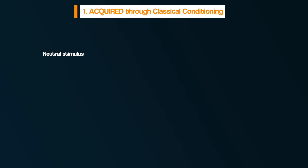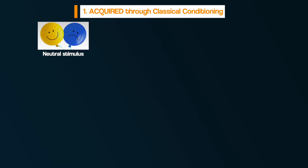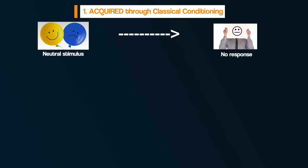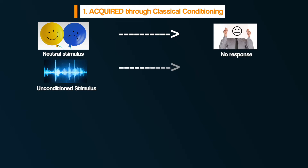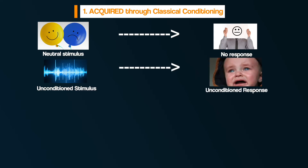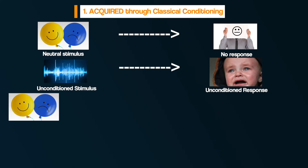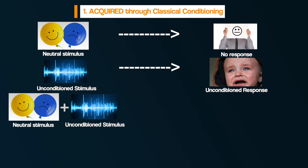Let's imagine someone has a phobia of balloons. The behaviourist explanation states that there is a neutral stimulus — in this case, balloons. It is neutral because in and of itself, balloons are neutral; they don't produce a phobic response. Then there is an unconditioned stimulus. The word unconditioned is getting at the idea that it has not been learned. For example, hearing a very loud noise can lead to a response of fear, anxiety or panic — we don't have to learn this, we just know. What happens is the neutral stimulus, a balloon, and the unconditioned stimulus, a loud noise, are paired together — or as behaviourists would say, associated together.